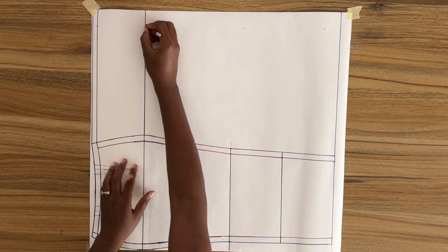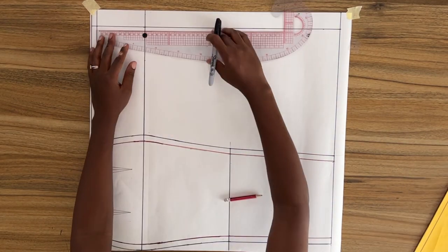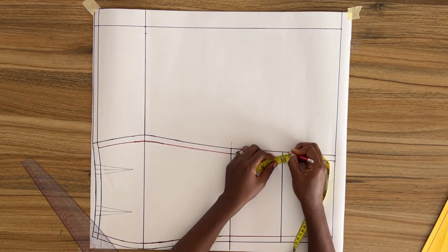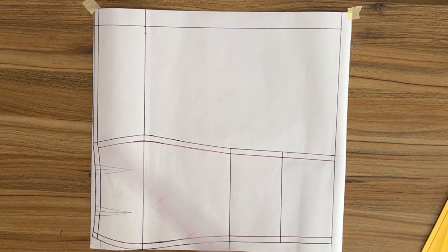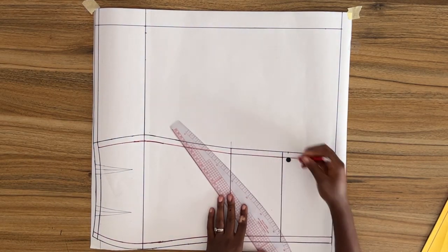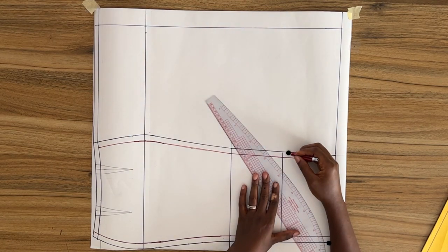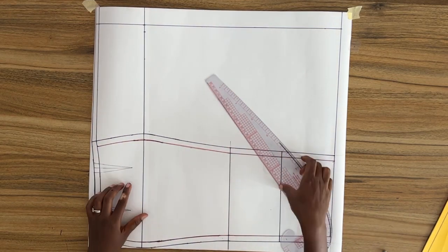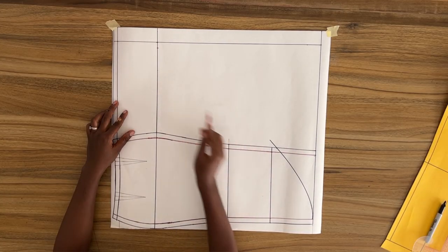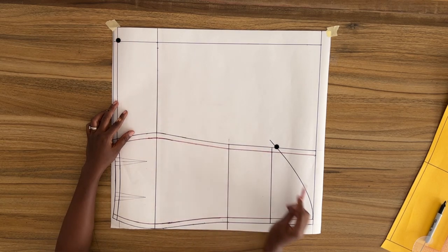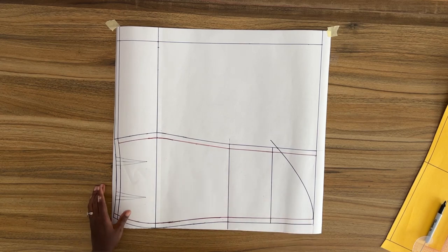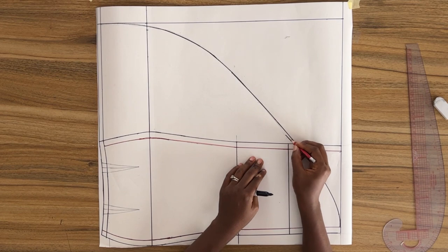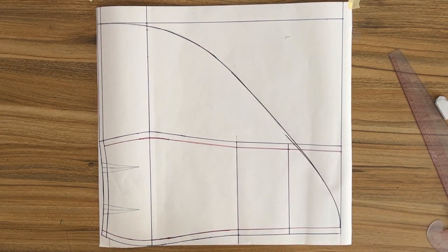Now I'm going to measure down half-inch hem allowance from this point, and using my French curve, I'm going to draw a curved line just to form that asymmetric hem. Then I'm going to draw a curved line from this point blending to the curved line below, and I should have something like this. So mine did not come out perfect, but this would do.